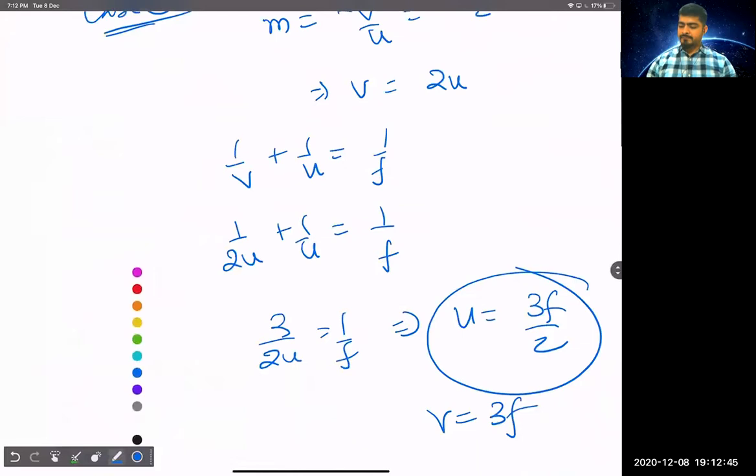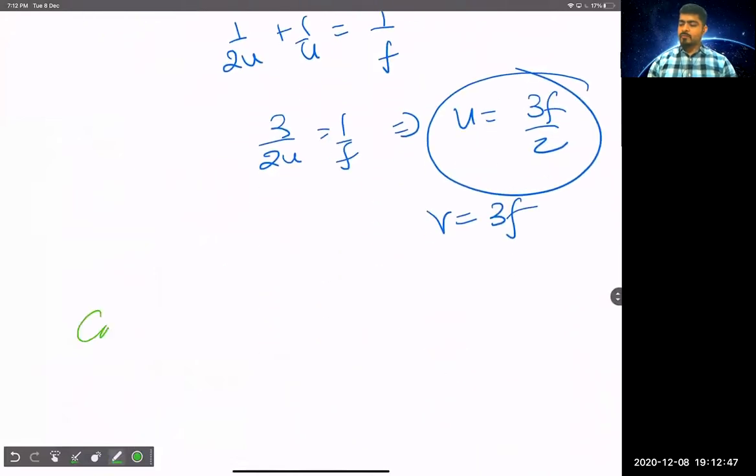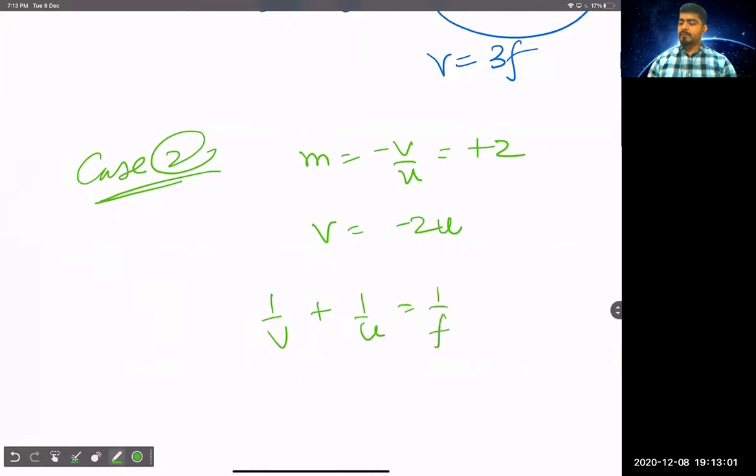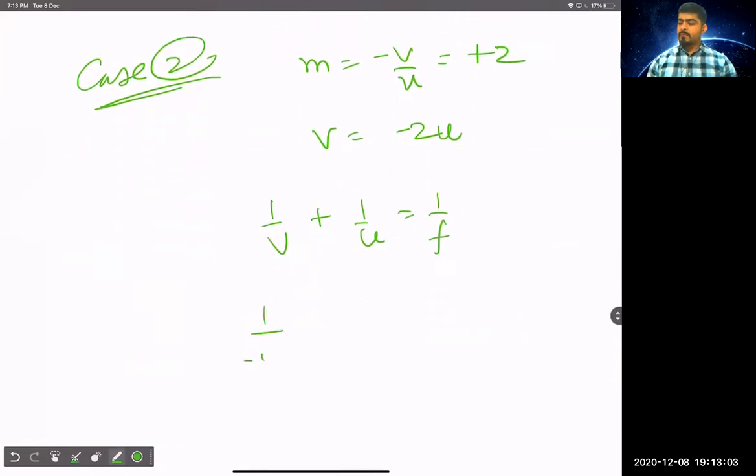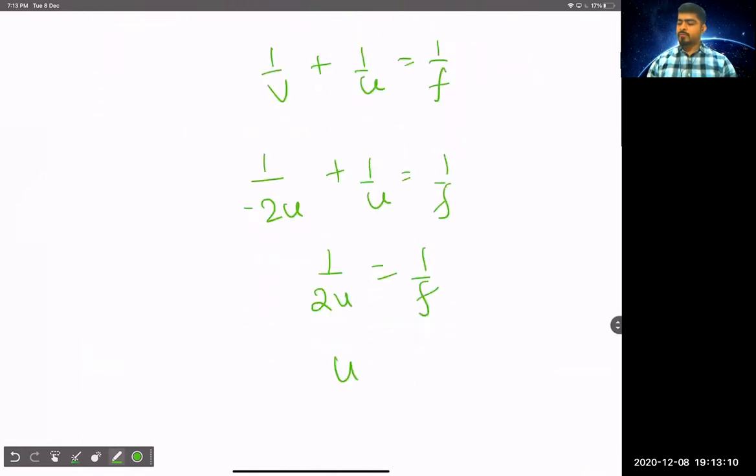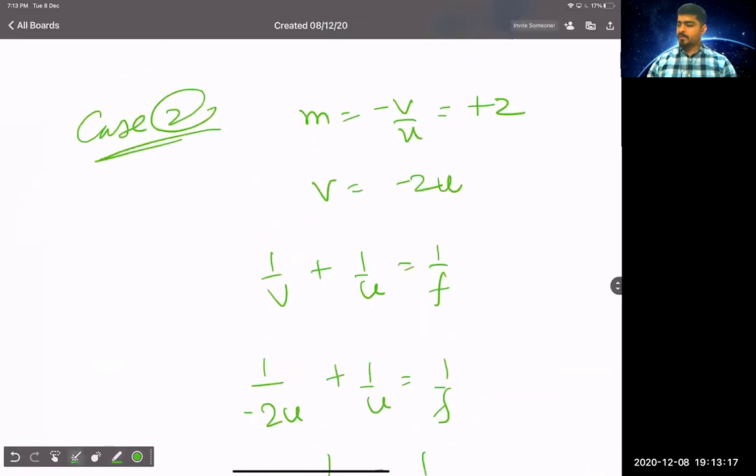Second case check. So in case 2, magnification minus V by U equals plus 2, so V equals minus 2U. Then 1 by V plus 1 by U equal to 1 by F, so 1 by minus 2U plus 1 by U equal to 1 by F, or 1 by 2U equals 1 by F. U equals F by 2, and V equals minus F.